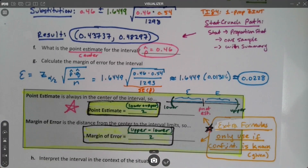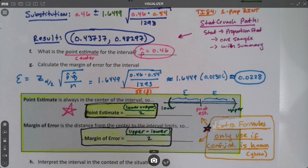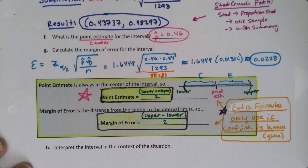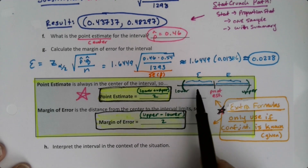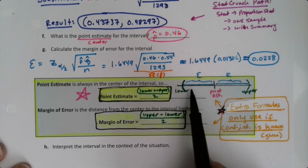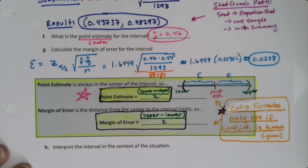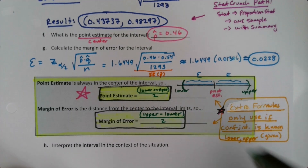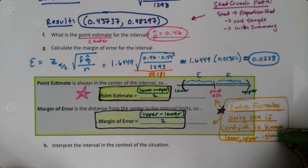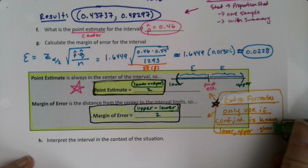That's exactly what we got with the real formula. This extra formula is the 'cheating' one — it takes advantage of the structure of the confidence interval. It only works if you know the lower and upper bounds, meaning they were given or you've already calculated them.